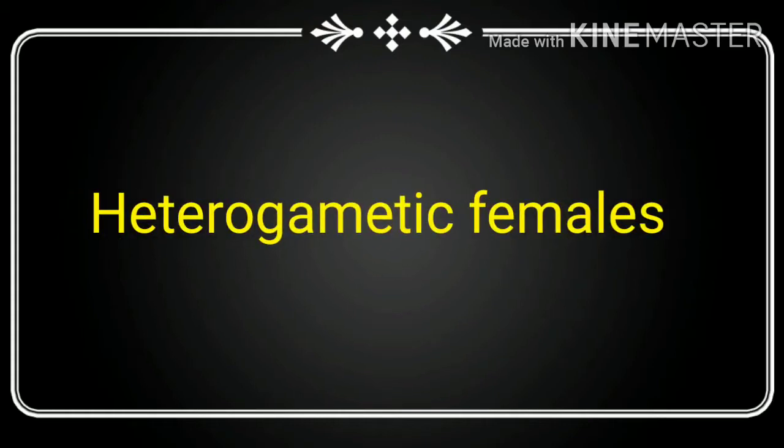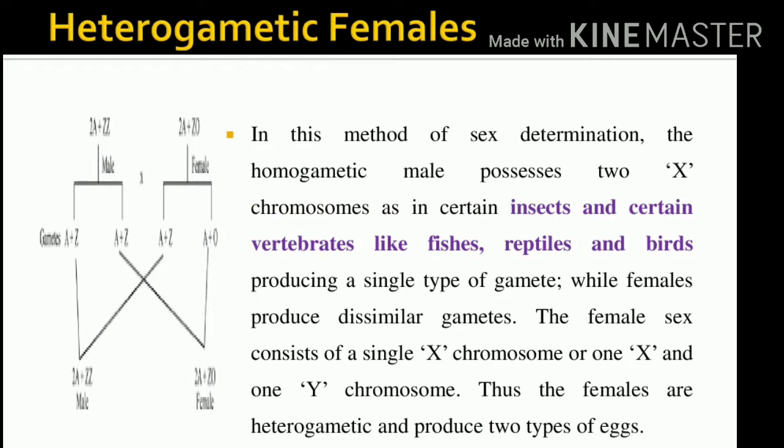In this slide we study heterogametic females. In certain insects and vertebrates like fishes, reptiles, and birds, the female possesses two types of gametes — dissimilar gametes. The female sex consists of a single X chromosome or a Y chromosome in these conditions of heterogametic females. Thus the females are heterogametic and produce two types of gametes.